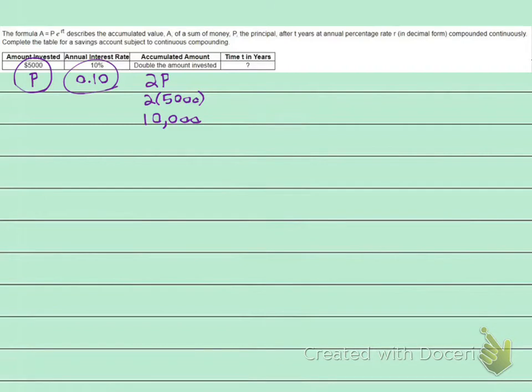They're asking how much time in years. This is what we want to know, the T. T is our unknown. So let's write down the formula: A equals PE to the RT. Now our A is 2 times P, so 2P equals PE to the RT.